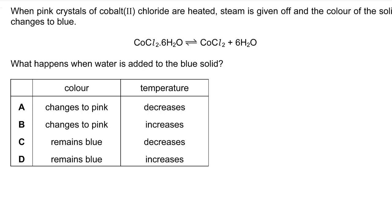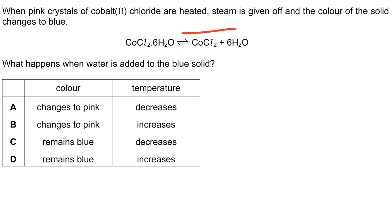Let's start with the first question. When pink crystals of cobalt chloride are heated, steam is given off and the color of the solid changes to blue. According to this balanced chemical equation, we have a reversible reaction. What happens when water is added to the blue solid? The reaction would go in the backward direction.